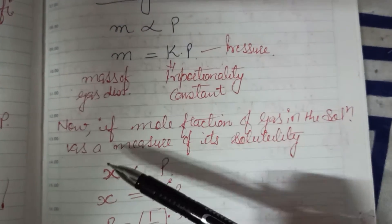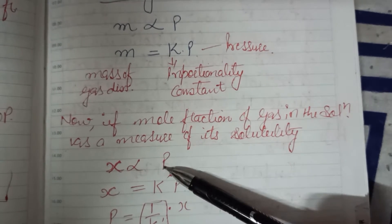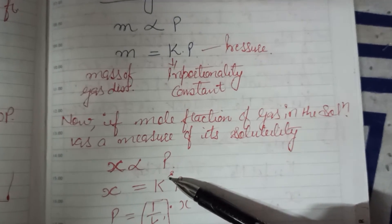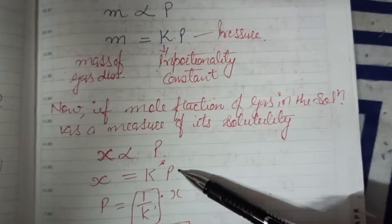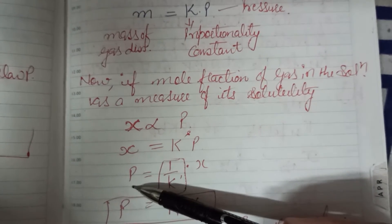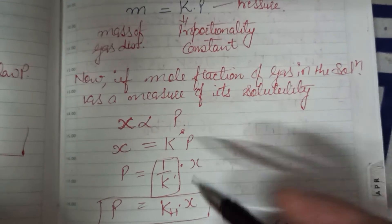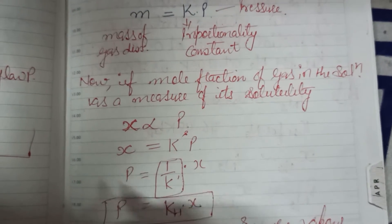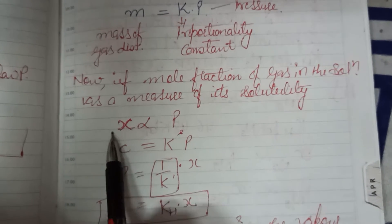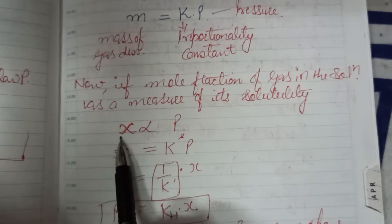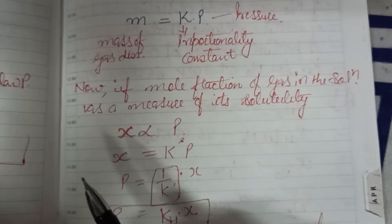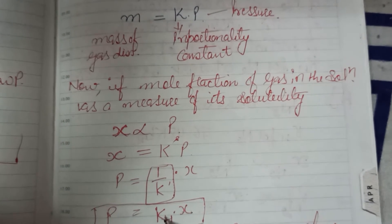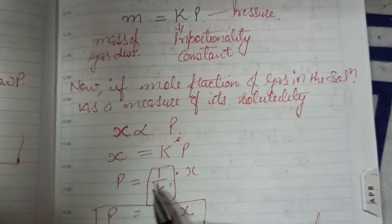So the mass of any gas dissolved is directly proportional to the pressure. If we take the mole fraction, the proportionality constant is k. So x = k·p. If we rearrange for pressure, then p = (1/k)·x. We call 1/k the Henry constant kH, so p = kH·x. The mole fraction represents the solubility — the mass of gas that is soluble — which is directly proportional to the pressure, and the proportionality constant is 1/k, that is the Henry constant.